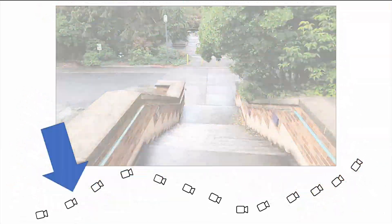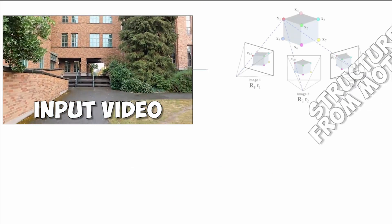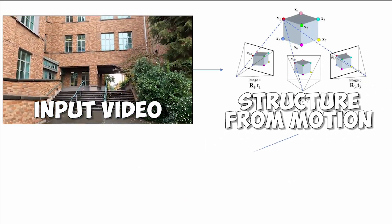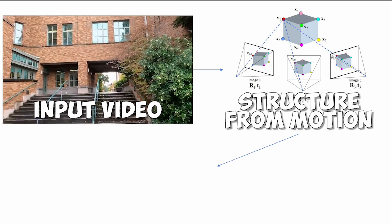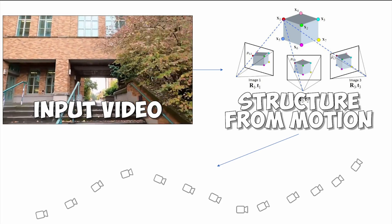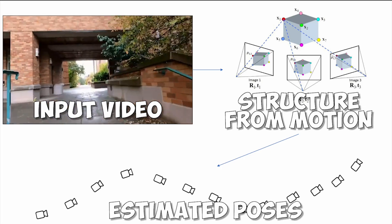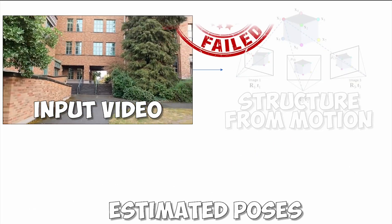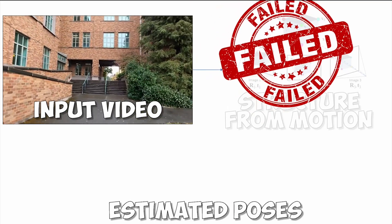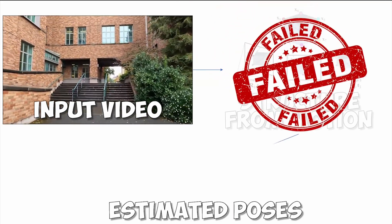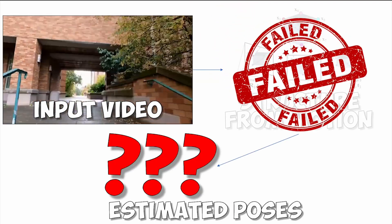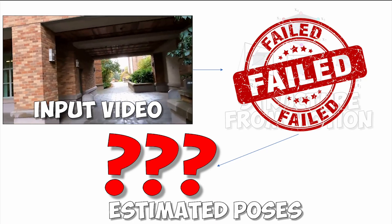One remaining issue is the camera poses. Most radiance field methods assume that the camera poses can be reliably estimated via structure-from-motion algorithms. However, structure-from-motion algorithms are often not robust. When they fail, we don't have the poses to work with.